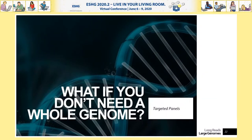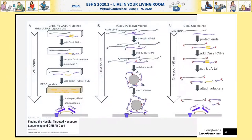But this begs a question: what if you don't need an entire genome — just targeted panels? Several groups have been working on this. Nanopore have shown various approaches: a CRISPR-Cas9 catch method using agarose plugs, Cas9 cutting, and PFGE retrieval; a dCas9 pulldown method; and the most efficient approach I've seen — a Cas9 cut method using guide RNAs to cut the DNA at sites of interest.